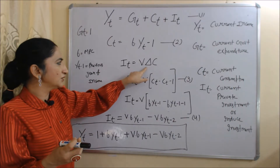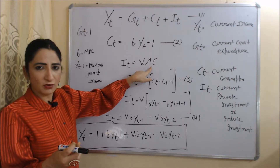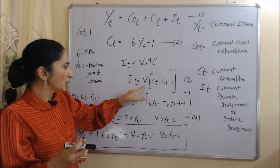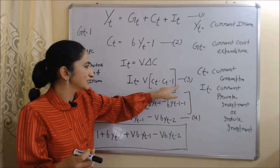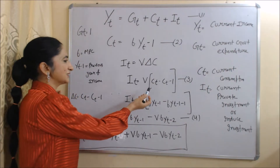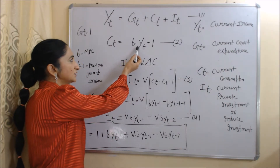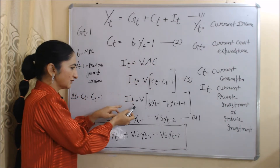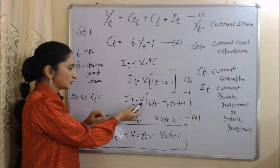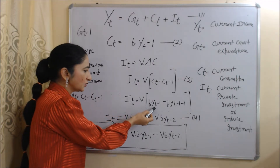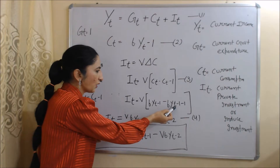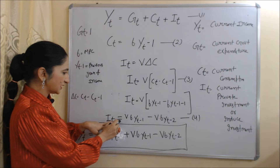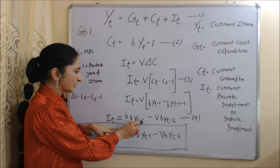Now we will substitute the value of change in consumption into the investment equation. Our equation becomes: It = V(Ct - Ct-1). This is our third equation. Since Ct = B × Yt-1, we substitute the value of Ct, and our equation becomes: It = V(B × Yt-1 - B × Yt-2). When we solve this, it becomes: It = VB(Yt-1 - Yt-2).